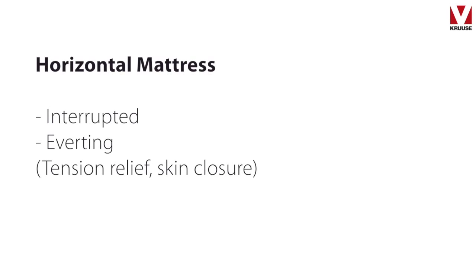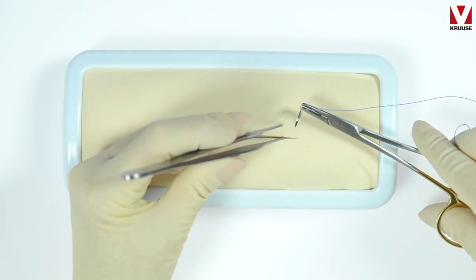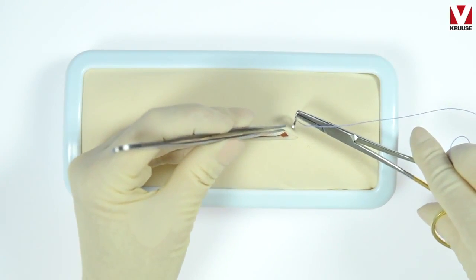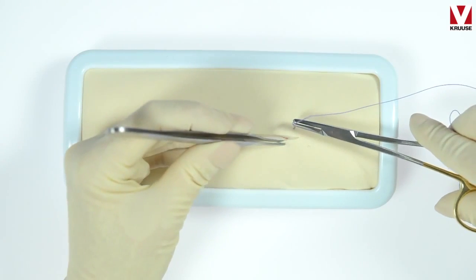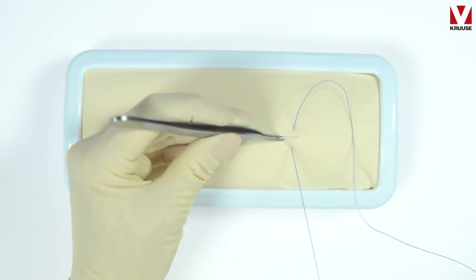Horizontal mattress interrupted Everton pattern. This is very useful if you have much tension on your incision, for instance if you're closing skin. You see here this is what I call a far near near far pattern.